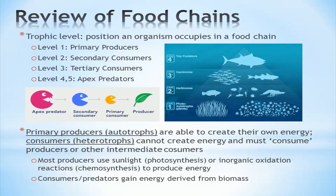Level 2 consists of secondary consumers, which feed exclusively on level 1 organisms. Level 3 consists of tertiary consumers, which feed on level 2 and below organisms. The last level, here shown as 4 or 5, consists of the apex predators at the top of the food chain.